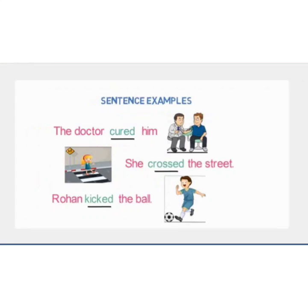It can better be understood with the help of more examples. 'The doctor cured him' — here cured is the main verb and the receiver is the person receiving the action of the doctor. 'She crossed the street' — crossed is the main verb and the object, or receiver, is the street. 'Kick the ball' — kick is the main verb while ball is the receiver of that main action.